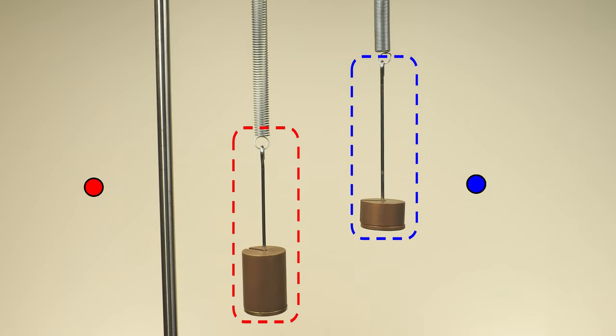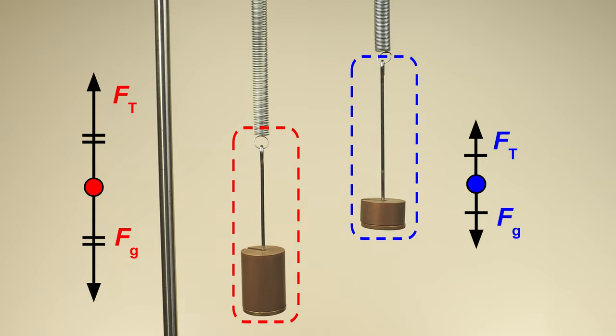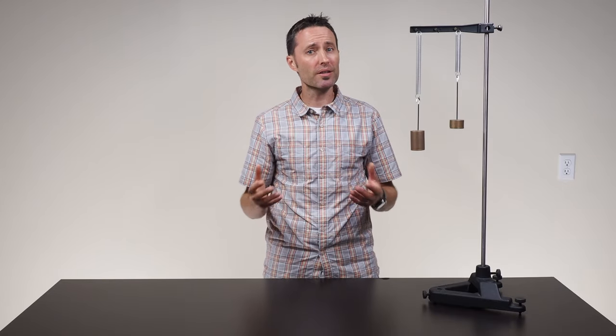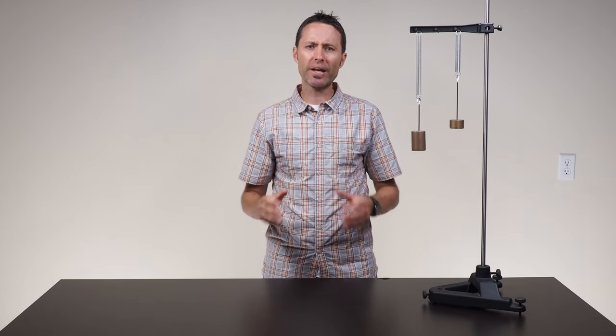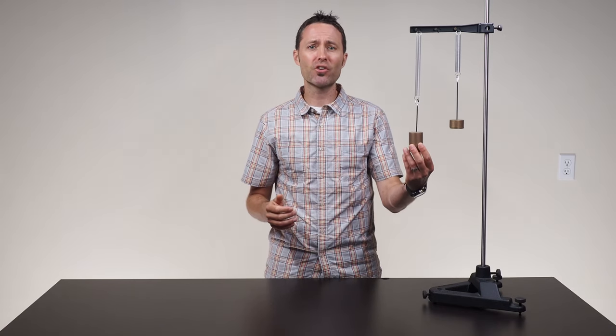Most students will draw a tension force pointing up that is the same size as the gravitational force for each of the hanging objects. Several students will also draw the gravitational force and tension force larger for the object whose supporting spring stretched the farthest. Ask volunteers to explain why they included the specific forces for each object and the reason for the length of each included force. Through a guided conversation, the class should conclude that the spring with the greatest stretch is exerting the largest tension force on the hanging mass.